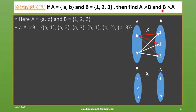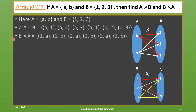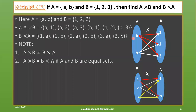Similarly, to find B cross A, the first set is B and the second set is A. Two arrows are drawn from each of 1, 2, and 3. Then B cross A has the first element from set B and the second from set A. Note that A cross B does not equal B cross A, because (a,1) and (1,a) are not equal. A cross B equals B cross A only if A and B are equal.